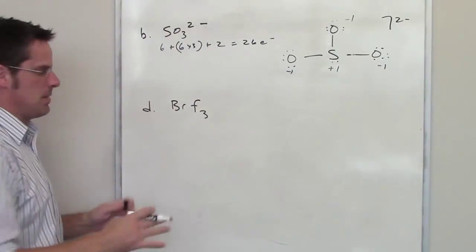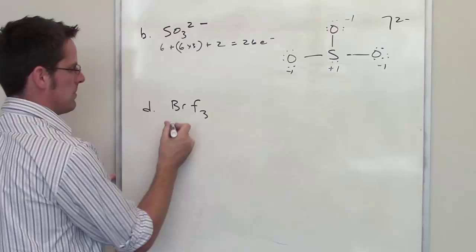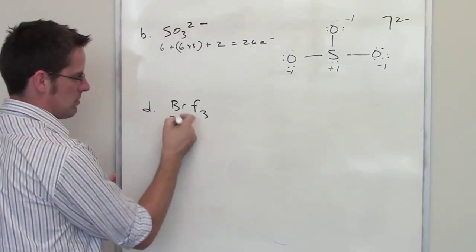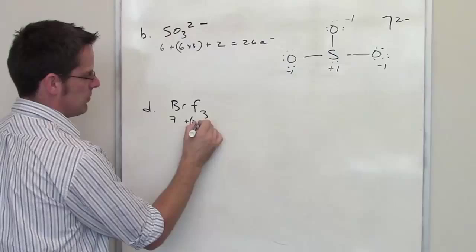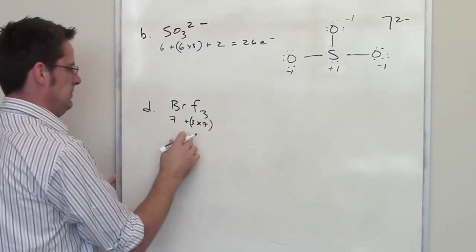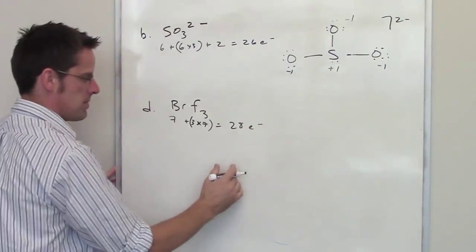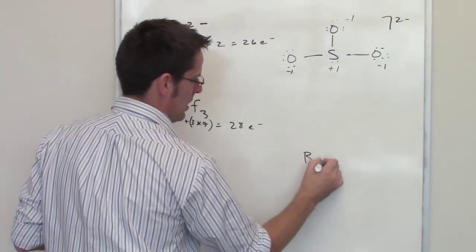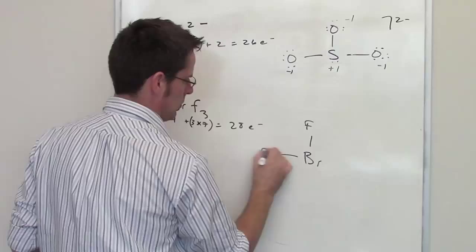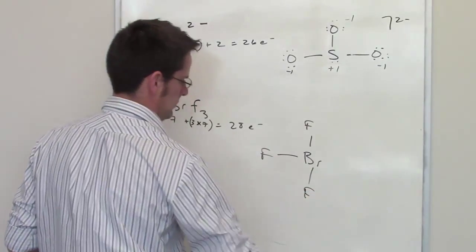Well now look at this other example. Drawing the Lewis structure, step one, I count the total number of valence electrons. I've got seven on bromine. I have three individual fluorines, each of which has seven valence electrons. So I add all of that up. It gives me 28 total electrons to play with. I now draw out the bonds. Bromine goes to fluorine, fluorine, fluorine.